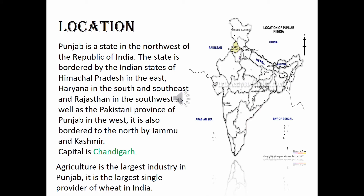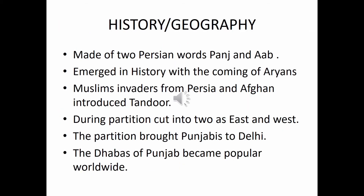Now first we will talk about the location. Punjab is a state in northern India, forming part of the larger Punjab region of the Indian subcontinent. The state is bordered by Himachal Pradesh to the north and northeast, Haryana to the south and southeast, and Rajasthan to the southwest. Chandigarh is the capital of this state. It has fertile land, and agriculture is the largest industry in Punjab. Punjab is also called the wheat bowl of India, as almost half of the wheat is grown here.